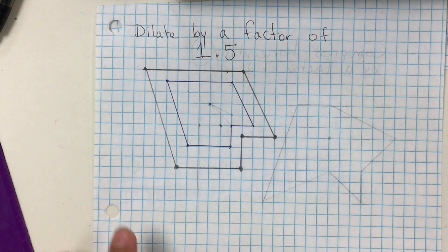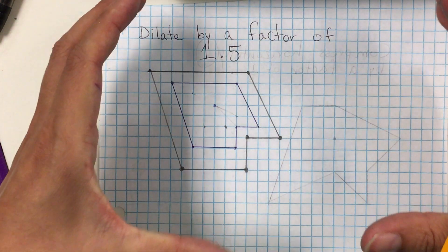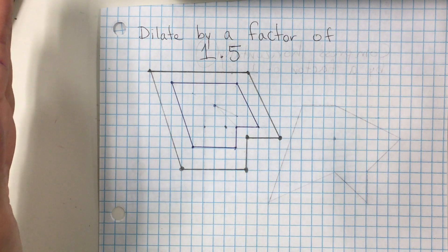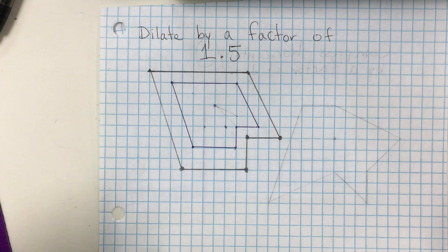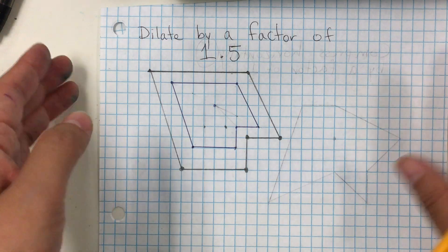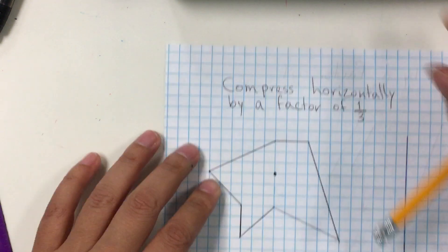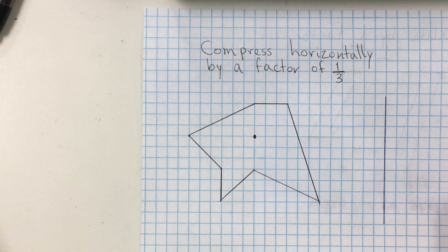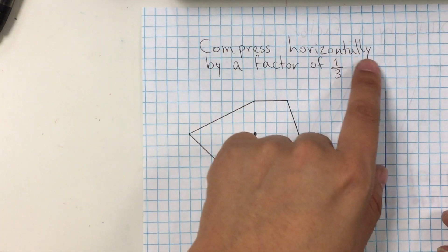When would you use dilations? When we're making a presentation and need smaller versions of big pictures for our posters. Also in engineering, sometimes they start making diagrams on large tables or butcher paper, and then they have to reduce the pictures to paper size. When we want portrait photos in wallet size, we're reducing them — that's another application of dilations.